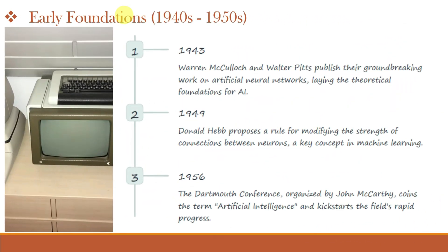The early foundations of Artificial Intelligence were laid in the 1940s and 50s. The first work now generally recognized as Artificial Intelligence was done by Warren McCulloch and Walter Pitts in 1943. They published their work on Artificial Neural Networks, which can be called the first theoretical foundation for Artificial Intelligence. After that, in 1949, Donald Hebb demonstrated a simple updating rule for modifying the connection strengths between neurons. His rule, now called Hebbian learning, remains an influential model to this day.